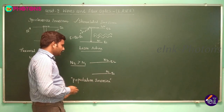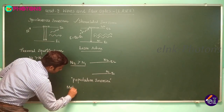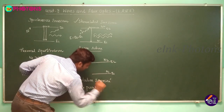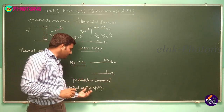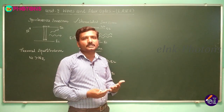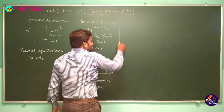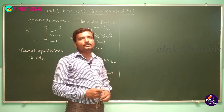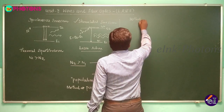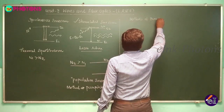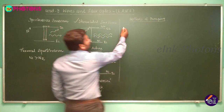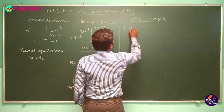To achieve population inversion, an external method is required. The method used to achieve population inversion is called pumping. There are a variety of pumping methods used to artificially drive electrons from the ground state to the excited state. The first method is optical pumping.